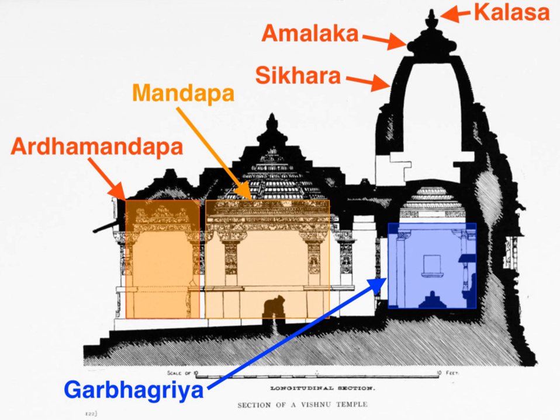Many regional styles developed, very often following political divisions, as large temples were typically built with royal patronage. In the North, Muslim invasions from the 11th century onwards reduced the building of temples and saw the loss of many existing ones. The South also witnessed Hindu-Muslim conflict that affected the temples, but the region was relatively less affected than the North. In the late 14th century, the Hindu Vijayanagara Empire came to power and controlled much of South India. During this period, the distinctive very tall Gopuram gatehouse — actually a late development from the 12th century or later — was typically added to older large temples.